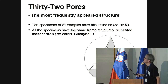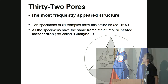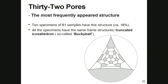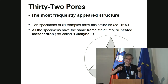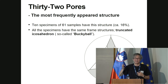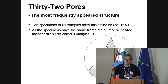Ten specimens out of 61 samples have a structure showing the bucky ball — truncated icosahedron — structure, as shown. This is the 32-pore model.